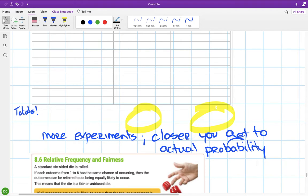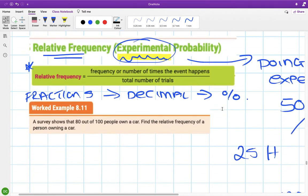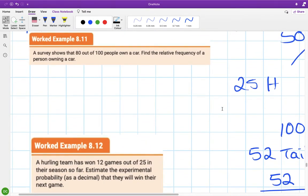I just want to look at some examples of relative frequency from your book. First one: a survey shows 80 out of 100 people own a car. Find the relative frequency of a person owning a car. This is an experiment of a sort. Somebody went around and asked 100 people 'Do you own a car?' Out of the 100 people, 80 people said they own a car. So to figure out the relative frequency you just make that fraction: you put 80 over 100. So the relative frequency of owning a car is 80 over 100.